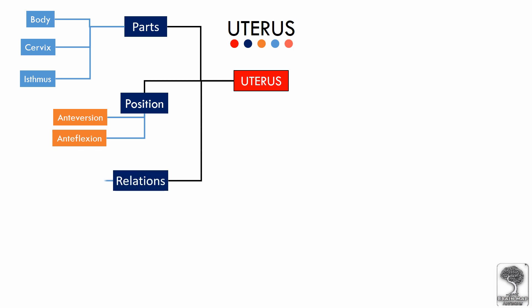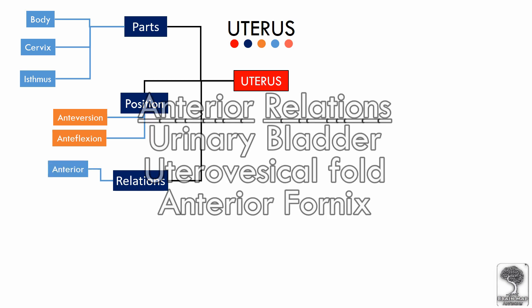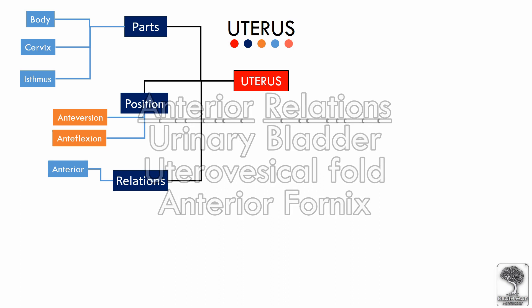Regarding the relations of the uterus, the important anterior relations are the urinary bladder, utero-vesicle fold of peritoneum, and the anterior fornix of the vagina.